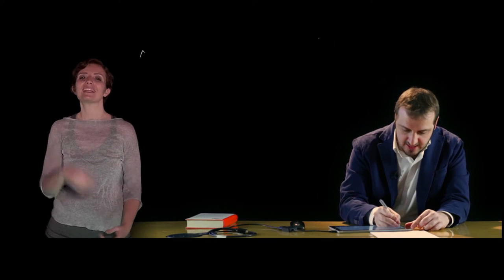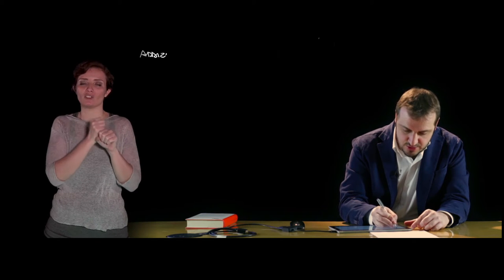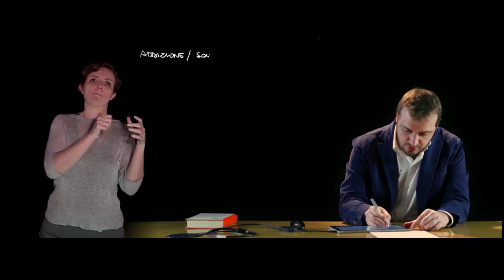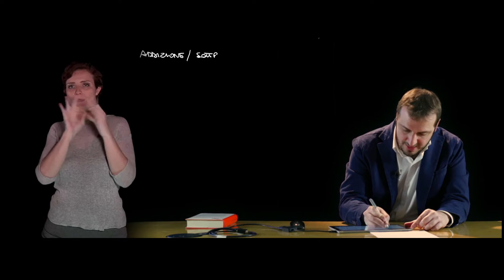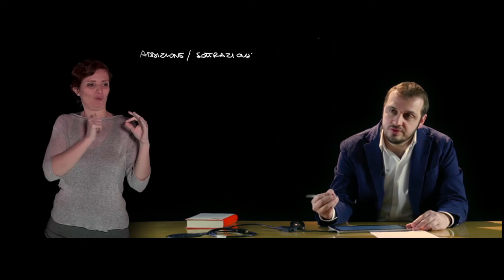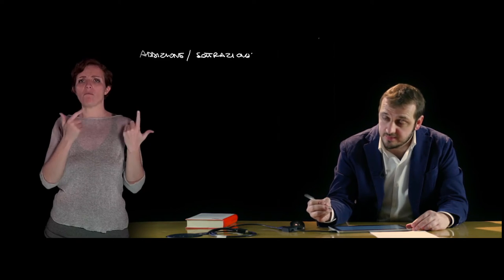Andiamo a vedere più nel dettaglio quelle che sono le operazioni. Cominciamo con l'addizione e la sottrazione tra i monomi, quindi la somma algebrica tra i monomi. La somma algebrica di due o più monomi simili è un monomio simile a quelli dati che ha come coefficiente la somma algebrica dei coefficienti.